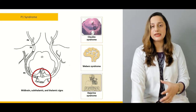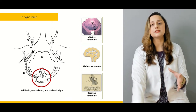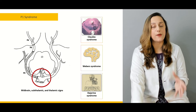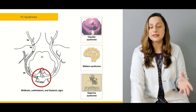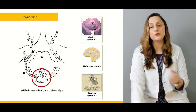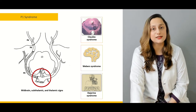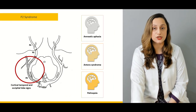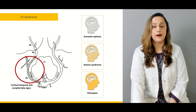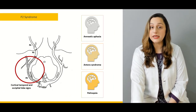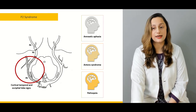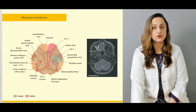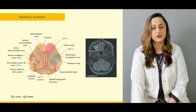We'll be going through important syndromic conditions such as Claude's syndrome, Weber's syndrome, and Dejerine's syndrome — how we define these conditions and what are the clinical features related to important P2 syndromic conditions such as amnestic aphasias and Anton's syndrome.